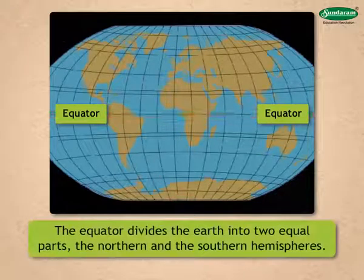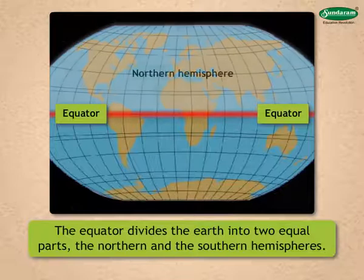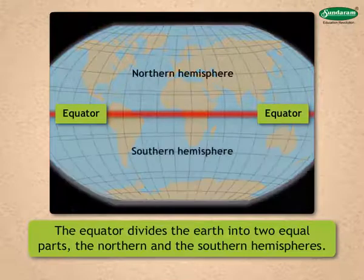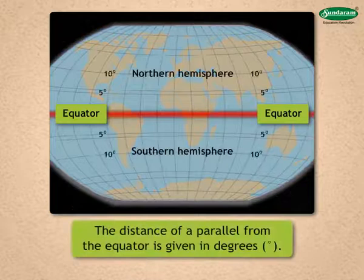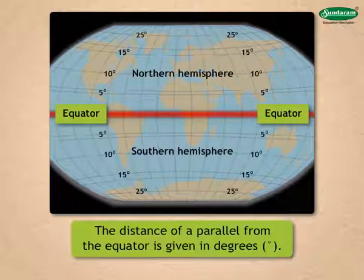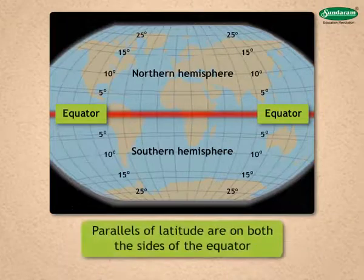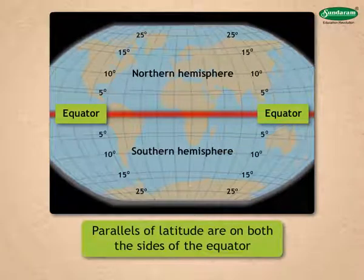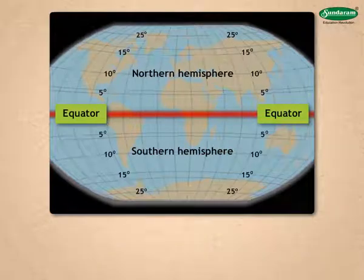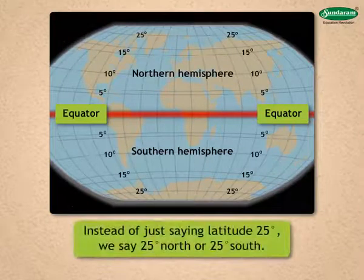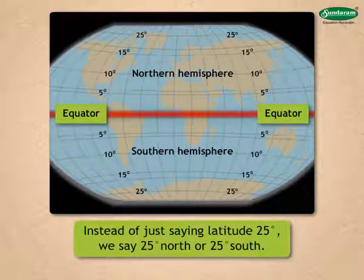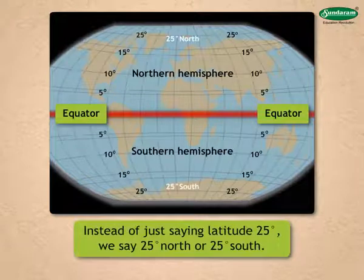The other parallels lie to its north and south. The equator divides the earth into two equal parts: the northern and the southern hemispheres. The distance of a parallel from the equator is given in degrees — this distance is known as latitude. As the parallels of latitude are on both sides of the equator, when we mention them it is necessary to mention their direction. Instead of just saying latitude 25 degrees, we say 25 degrees north or 25 degrees south.